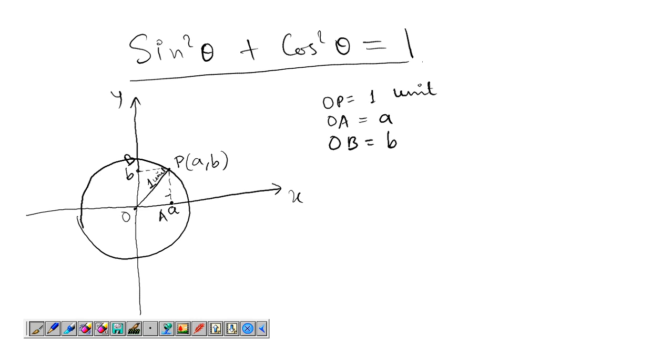Since we have drawn perpendiculars, triangle OAP is a right angle triangle right angled at A, and we take angle AOP is equal to θ.